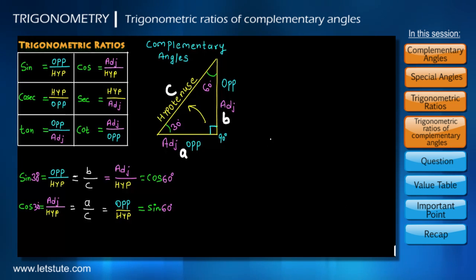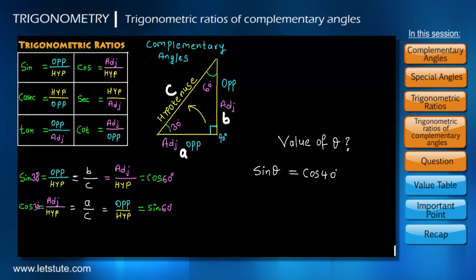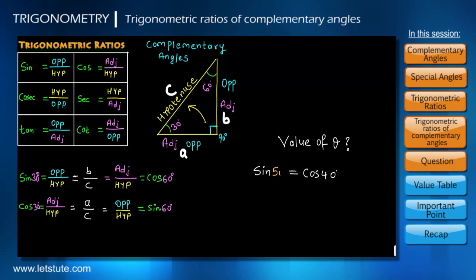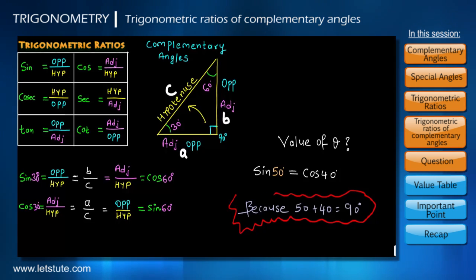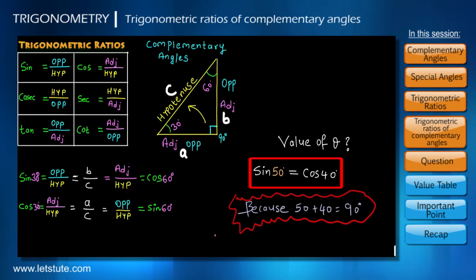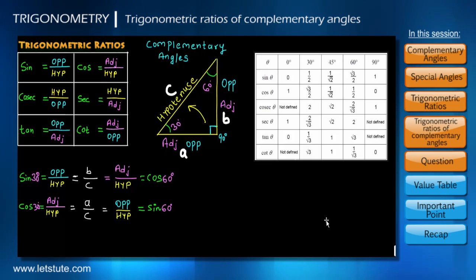Now let me ask you a question: what will be the value of theta for which sin theta equals cos 40? It is 50, because 50 plus 40 gives us 90. Therefore, sin 50 equals cos 40. And as mentioned in our previous session, we have predefined values for these specific angles.